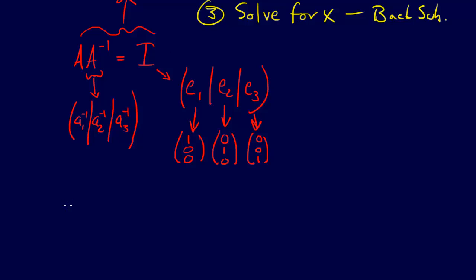Well, actually, if we realize it, A times the first column of A inverse is going to equal E1. Okay, so that's going to equal the first column. So if we can solve this problem, then we get the first column. And A times the second column inverse, whatever this is, right, because this is unknown, that's going to equal E2. And then A times A3 inverse equals E3.